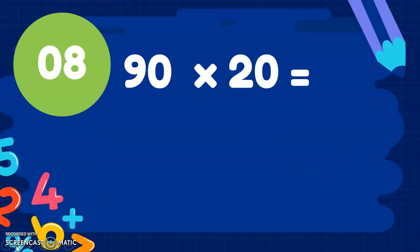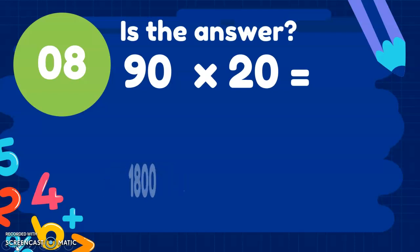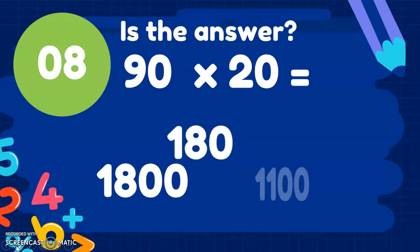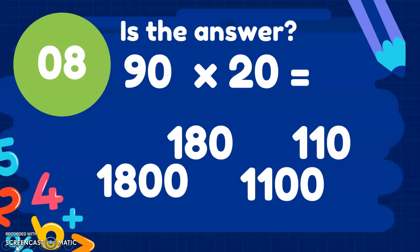Question number 8. 90 times 20. So is the answer 1,800, 180, 1,100 or 110? It's a tricky one, this one. Getting a bit harder now. Remember, when times tables start to grow, use a fact you already know. What do you already know that can help you? Pause the video and have a think.